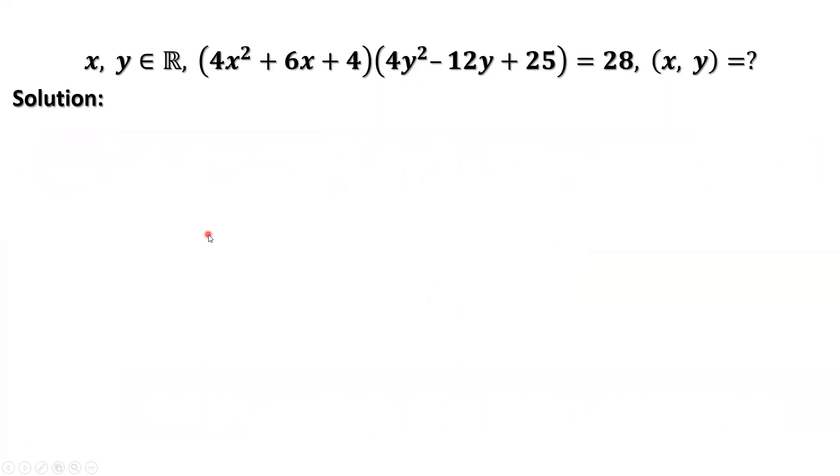In the original question, there is additional given information. This equation has a unique solution. In our solution, we are not going to use that condition. I think that given information is unnecessary.